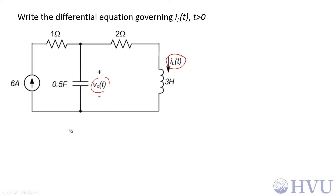I write on my circuit diagram the current through the capacitor, so this current is going to be 0.5 — the capacitance — times dVc by dt. Likewise, for the inductor, its voltage is going to be 3 Henrys times dI_L by dt. Now I've got my sign conventions and the voltage-current relationships taken care of for the energy storage elements.